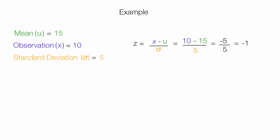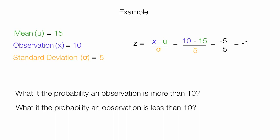Now I can ask, what is the probability an observation is more than 10? And also, I can ask, what is the probability an observation is less than 10?